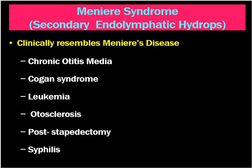What is Meniere's syndrome? As already mentioned, Meniere's disease means idiopathic endolymphatic hydrops — cause unknown. But when the cause is known for endolymphatic hydrops, it is called secondary endolymphatic hydrops or Meniere's syndrome. It clinically resembles Meniere's disease, but there is a known causative factor — such as a sequelae of chronic otitis media by infection or inflammatory process.